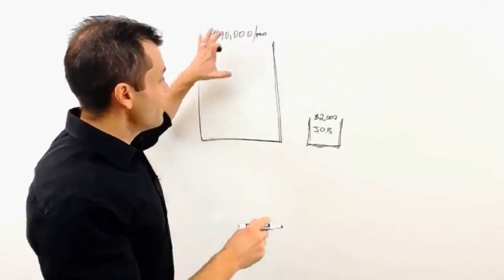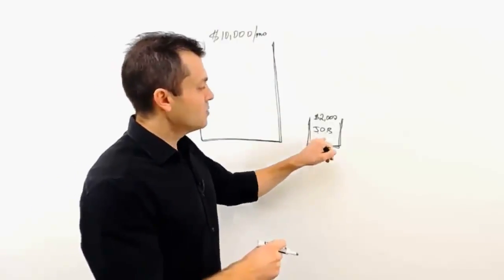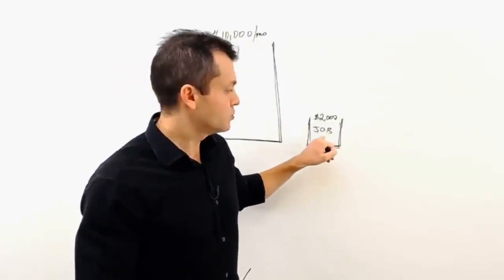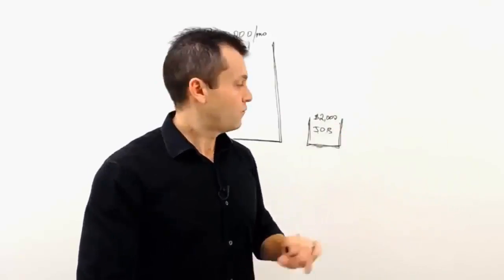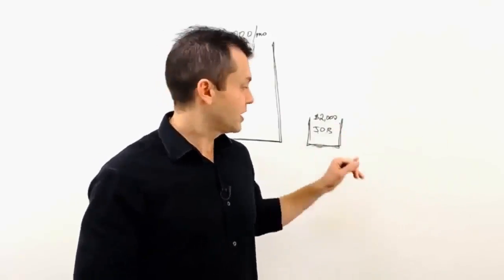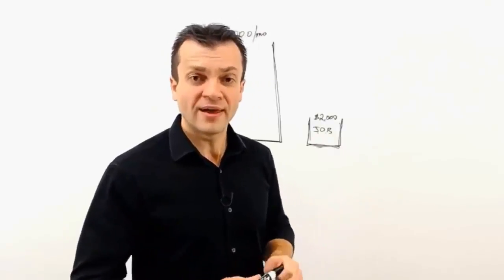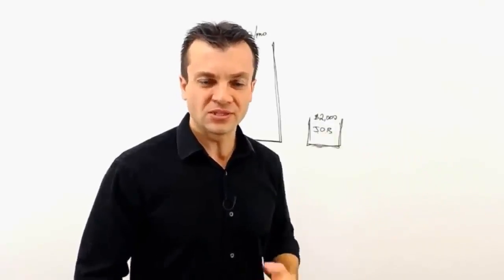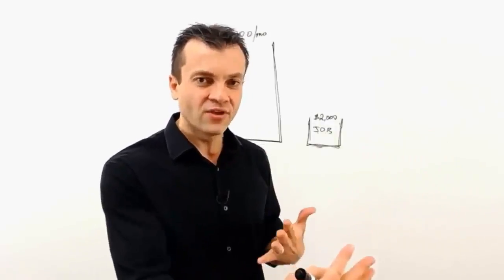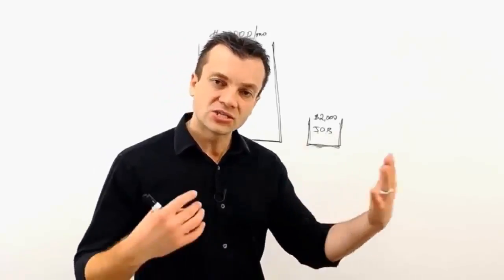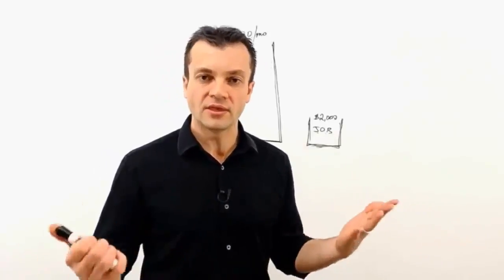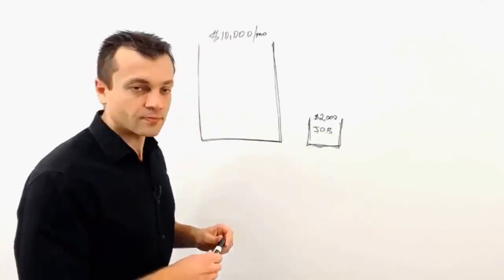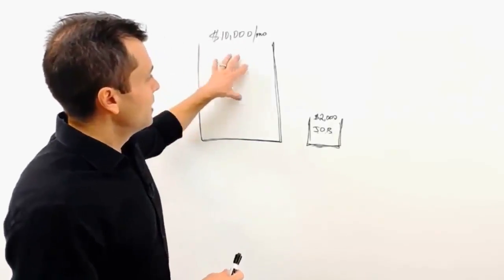Every single month this bucket gets emptied out. How difficult is it to make two thousand a month? Not very — you just trade 40 hours a week and get your paycheck, then do the same thing again. The only problem is there's no living. You're just making somebody else rich at your own expense, trading your life for a measly bucket. You cannot serve your family the way they deserve, so we need to get a bigger bucket.